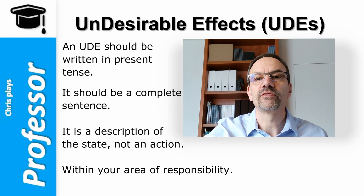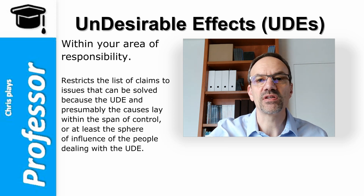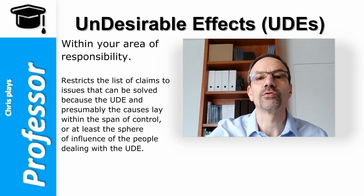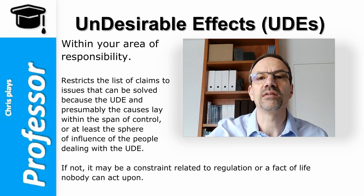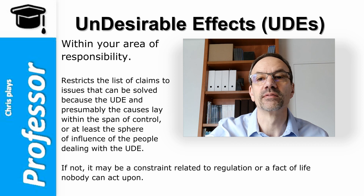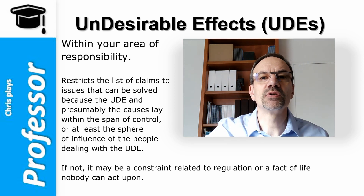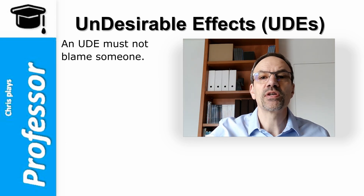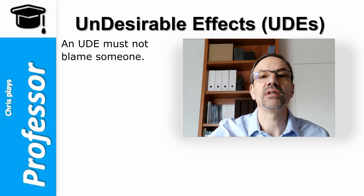Within your area of responsibility — here the analyst wants to restrict the list of claims to issues that can be solved because the UD and presumably the cause lay within the span of control or at least the sphere of influence of the people dealing with the UD. If not, it may be a constraint related to regulation or a fact of life nobody can act upon, like the sun is shining too bright — which led to the reinforcement stated as something can be done about it. It must not blame someone, as it would otherwise be the best way to start a fight or move onto emotional ground.